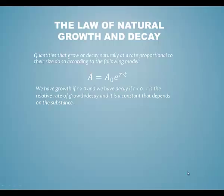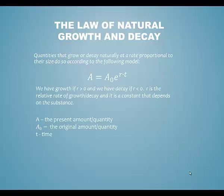If r is greater than 0 we have a quantity that is growing, and if r is less than 0 we have a quantity that is decaying. R is known as the relative rate of growth and decay and it's going to be constant depending on what exactly it is that's growing or decaying. A in the formula refers to the present amount or quantity, a sub 0 is the original amount or quantity, and t is time.